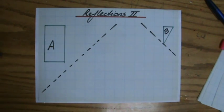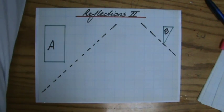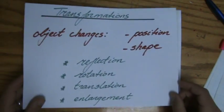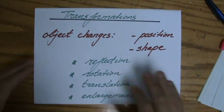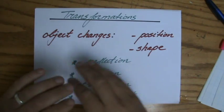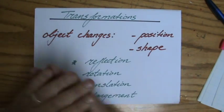Welcome back, we're still doing reflections. A reflection is a type of transformation where a particular object, like a triangle or rectangle, changes position or shape, sometimes both.